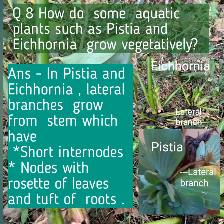Question number eight: How do some aquatic plants such as Pistia and Eichhornia grow vegetatively? Answer: In Pistia and Eichhornia, the lateral branches grow from the stem, which have short internodes and nodes with a rosette of leaves and tufts of roots.